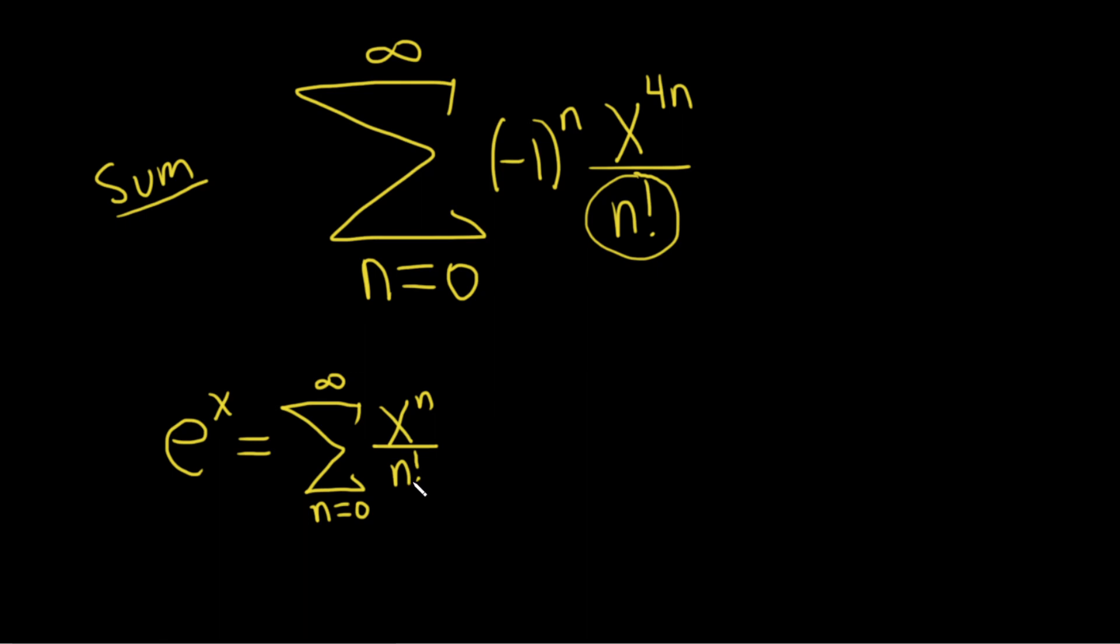So we have the n factorial already. What's different is the x to the 4n. We also have this negative 1 to the n. So I think what will work is if we look at e to the negative x to the 4th.